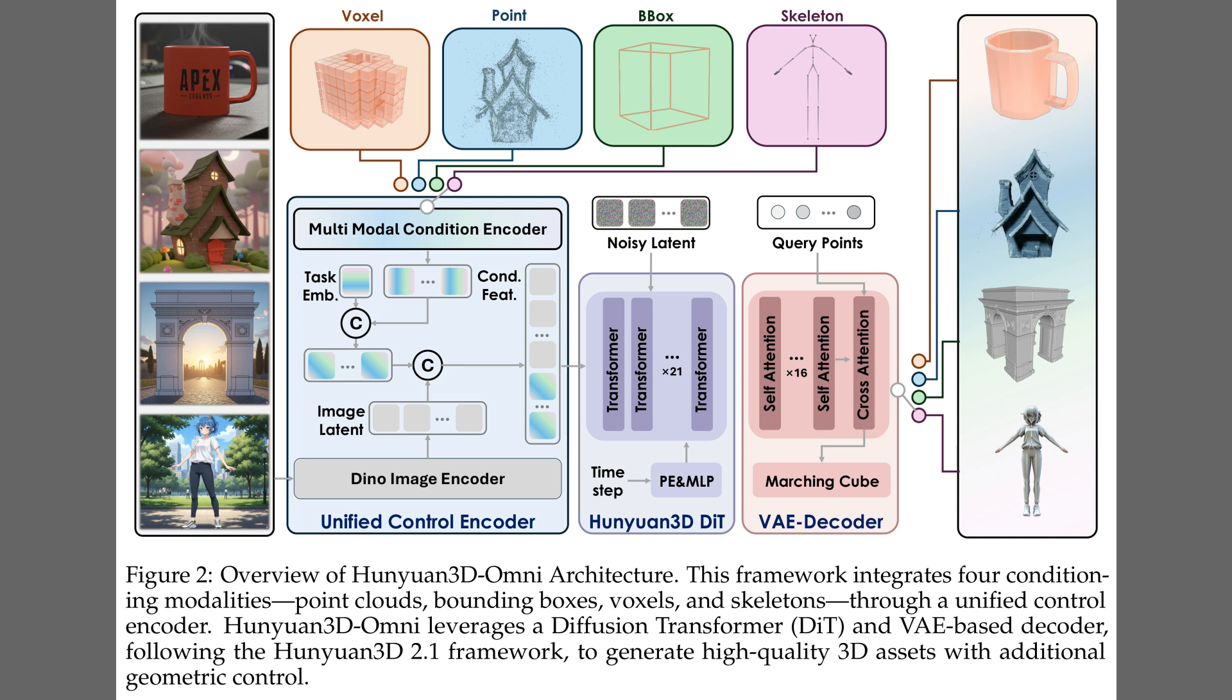The diffusion transformer predicts the clean latent, because denoising steps move noise toward a shape representation. The 3DVAE decoder turns that latent into a mesh via signed distance field, so the final output matches the requested structure.